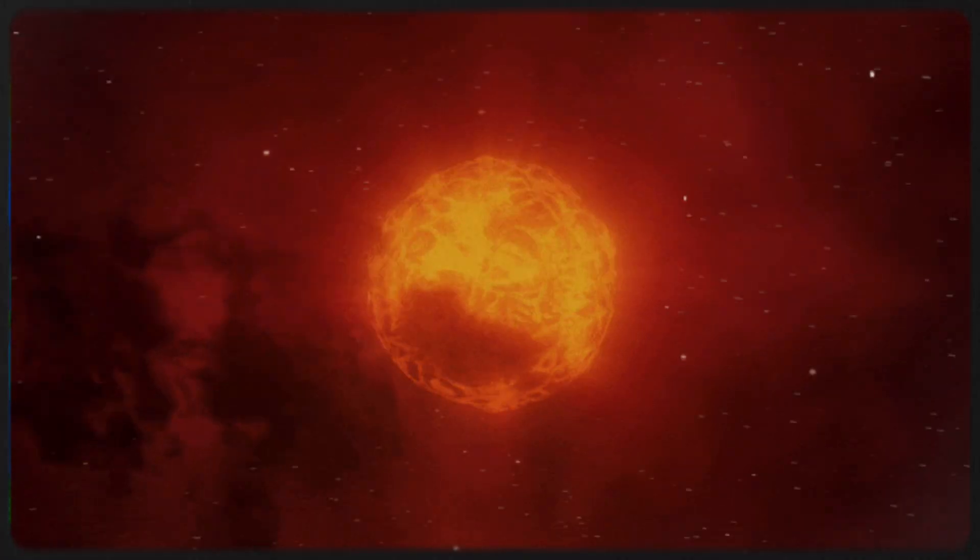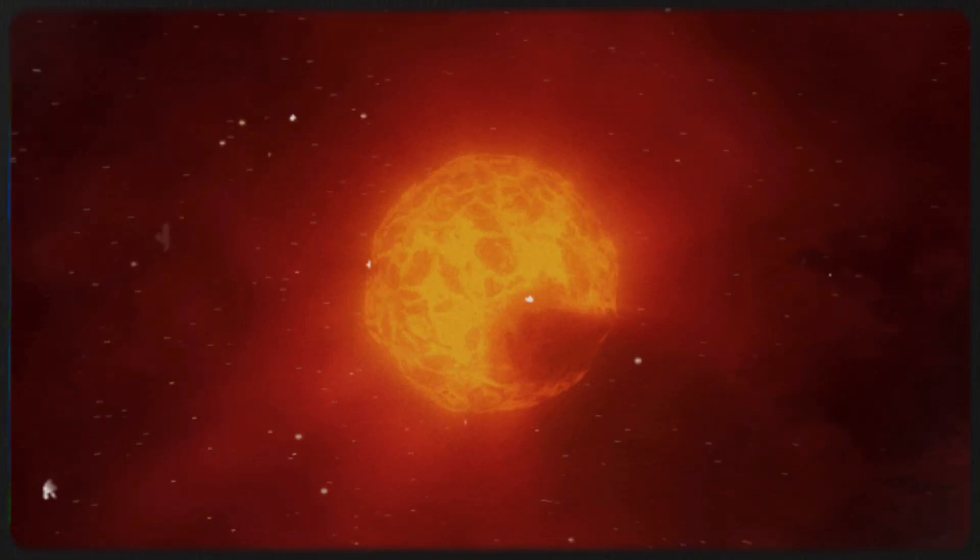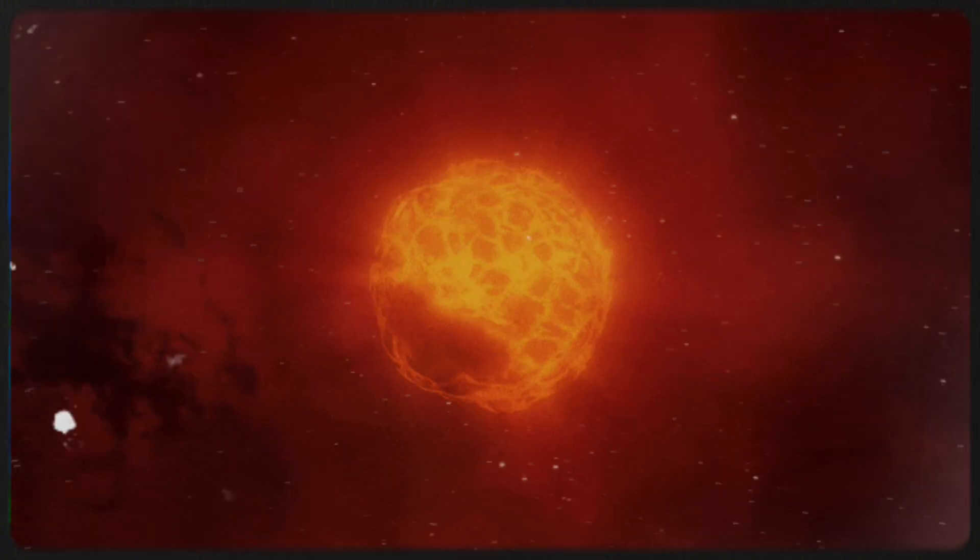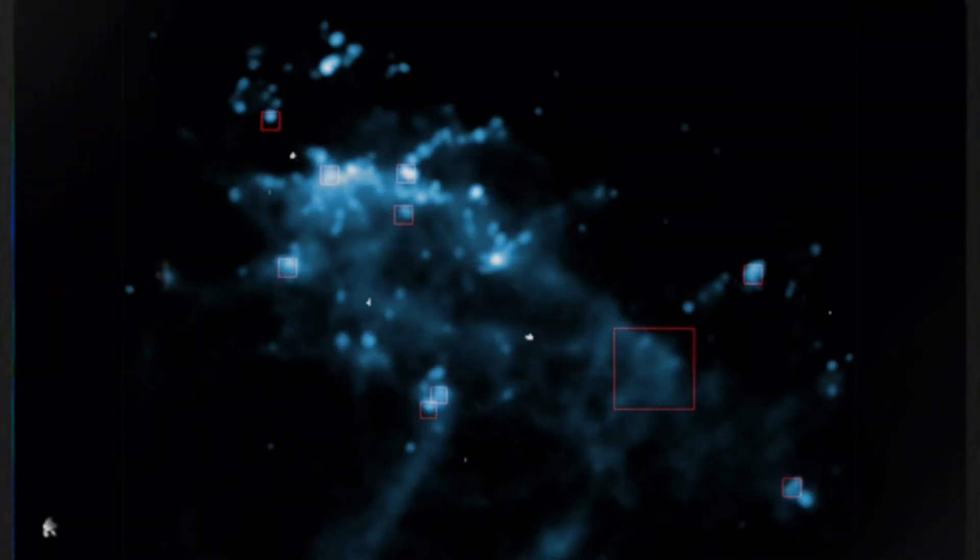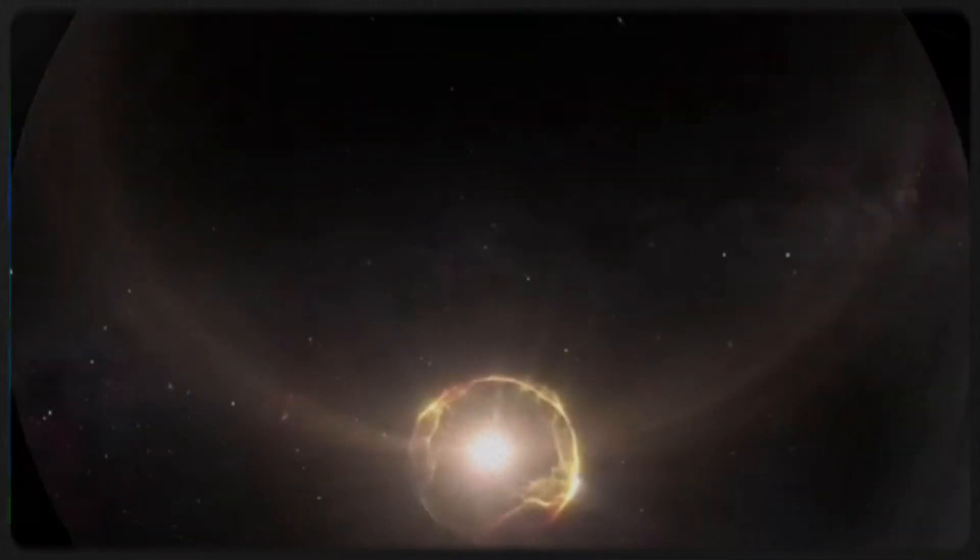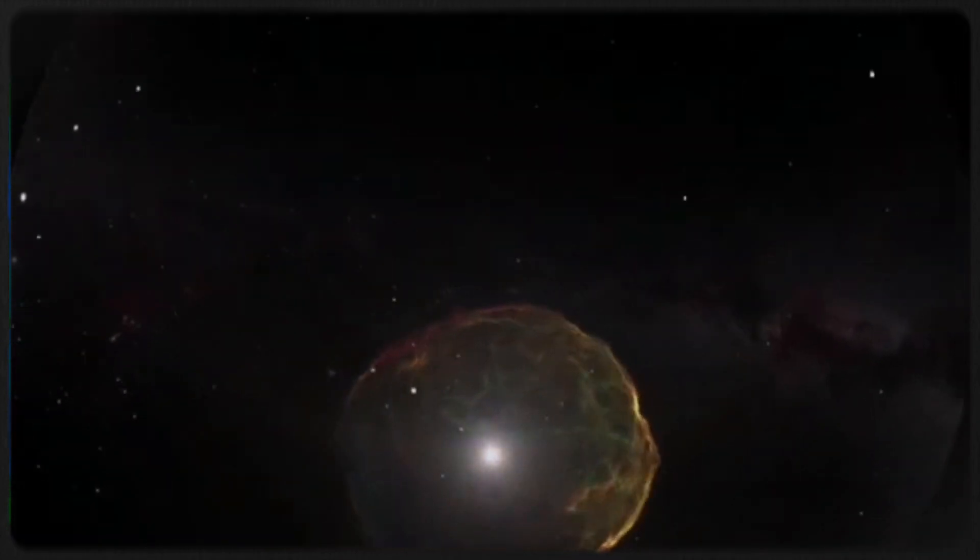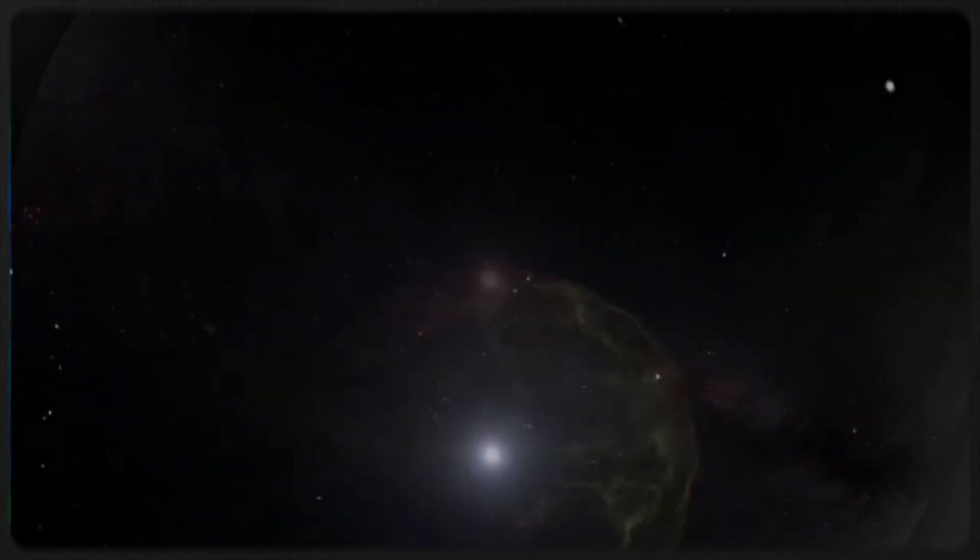Betelgeuse is on the edge of a core-collapse supernova, a cataclysmic explosion that happens when massive stars burn through their nuclear fuel and succumb to the pull of their own gravity. Core-collapse supernovae are some of the most energetic and destructive phenomena in the cosmos. When Betelgeuse finally explodes, it will do so in a matter of seconds, yet it will release more energy than our Sun will over its entire billions of years of existence.